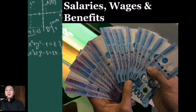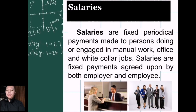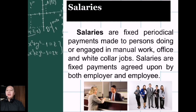Here are the three things we will be covering for today's discussion. To start off, what is salary? Oftentimes, salary, wages and benefits are used interchangeably — people use them interchangeably and sometimes don't know the definitions. Salaries are fixed periodical payments made to persons engaged in manual work, office and white-collar jobs — administrative work that does not require too much physical effort.